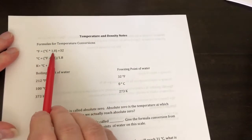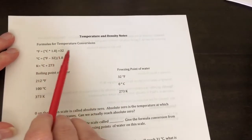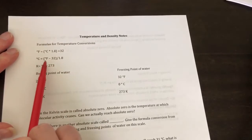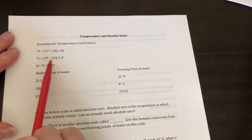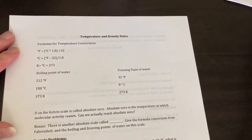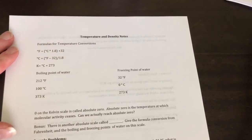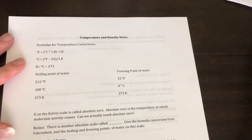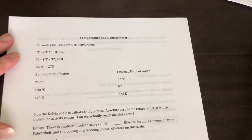Fahrenheit is equal to 1.8 times the degree Celsius plus 32. Degrees Celsius is Fahrenheit minus 32 all divided by 1.8. Kelvin, the Kelvin scale is degrees Celsius plus 273.